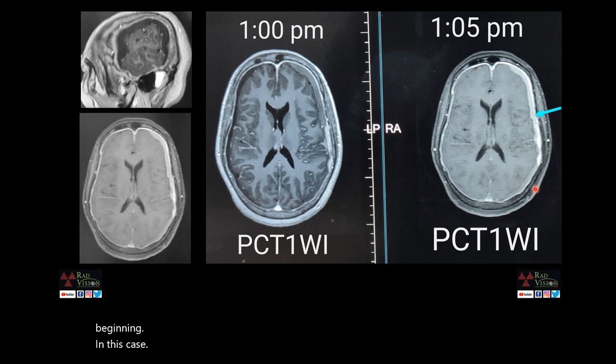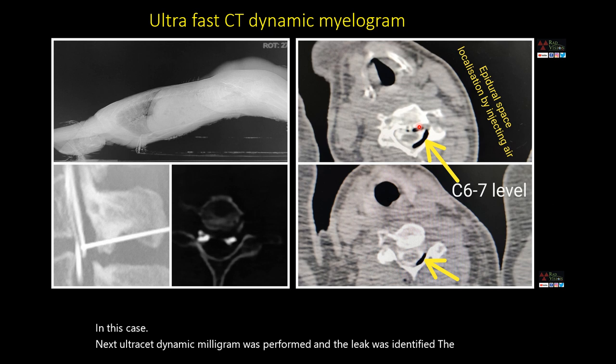Ultrafast CT dynamic myelogram was performed and the leak was identified at the level of C6-C7 and also treated with epidural blood patch.